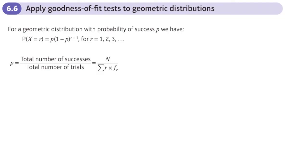This is the sixth and final section of the chi-squared test chapter, and here we're going to be looking at applying goodness-of-fit tests to the geometric distribution.